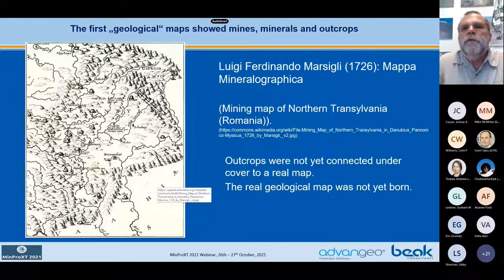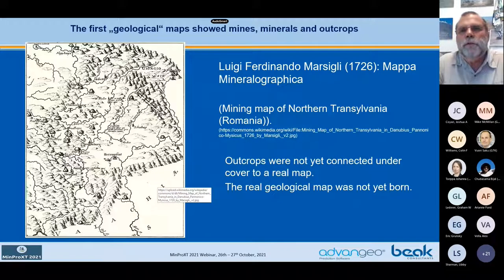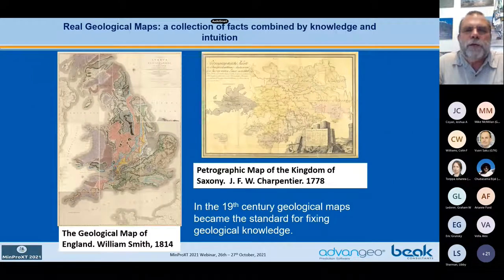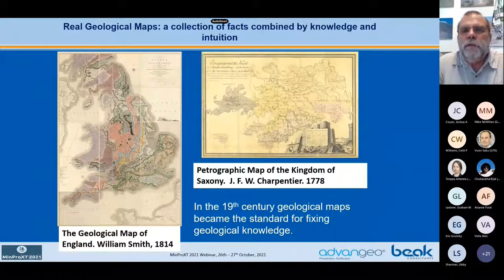Much later in the 18th century, a type of geological maps was created. Here we have an example from Romania showing the locations of gold mines, but not a real geological map yet. These maps were then created in the later 18th and 19th century. Here we have as examples the geological map of England and the petrographic map of the Kingdom of Saxony.